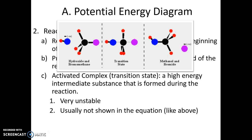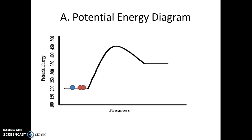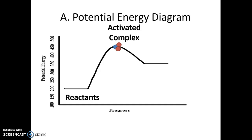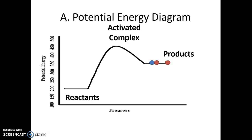Here is your basic potential energy diagram. We start out with the reactants, then those reactants go up the hill to become the activated complex, where everything is smushed together — a high energy state. The potential energy axis on the left measures that energy; the highest point is about 450 kilojoules. At the end of the reaction progress, you have products — something new is formed.